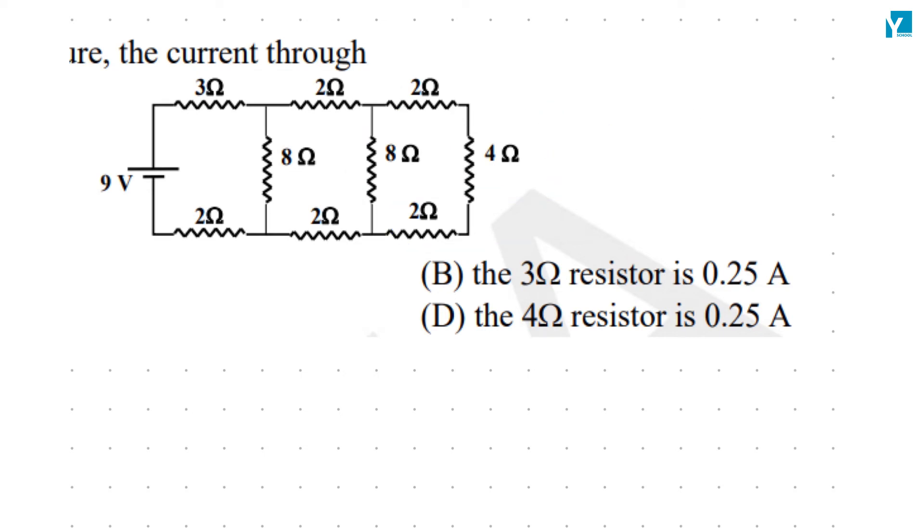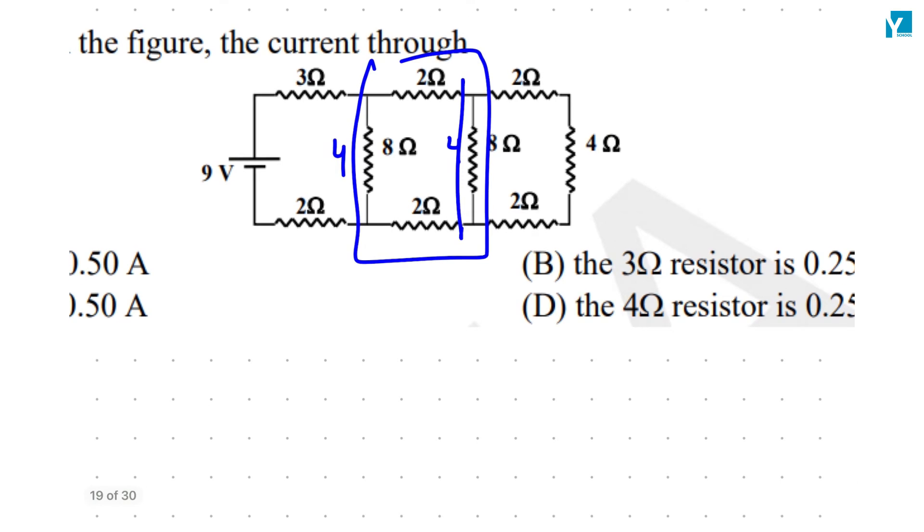This 4 is again the same scenario. This is 4 here and this whole thing again becomes a 4 here. And the total resistance is 4 plus 3, 7 plus 2, 9.